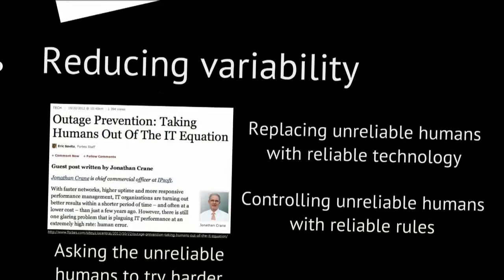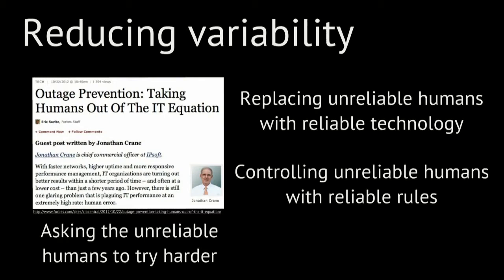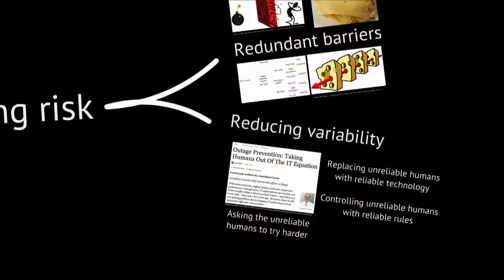The other principle is that if we have constructed risk as your unreliability, then what we do to manage risk is to reduce that unreliability, or to reduce the variability of the system. We can do so by simply replacing unreliable humans with more reliable technology — as seen in this blog post entitled 'Outage Prevention: Taking Humans Out of the IT Equation.' We could also control or replace you with more reliable rules, or simply ask you to try harder, to be more reliable — appealing to your motivation. Those two strategies — the use of redundant barriers and reducing variability — are the most typical ones used when constructing risk as a product of unreliable system components.